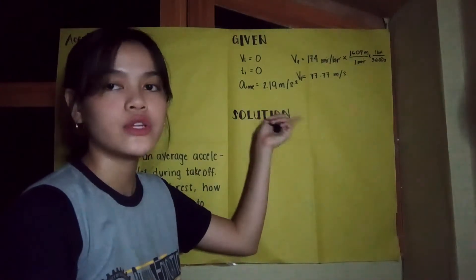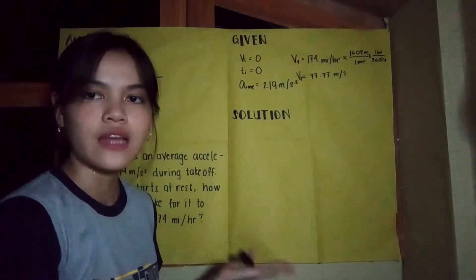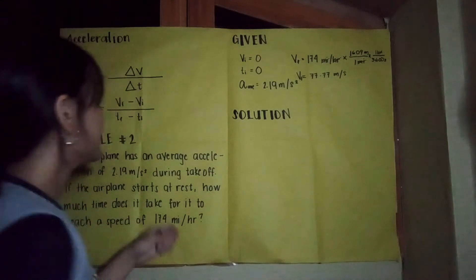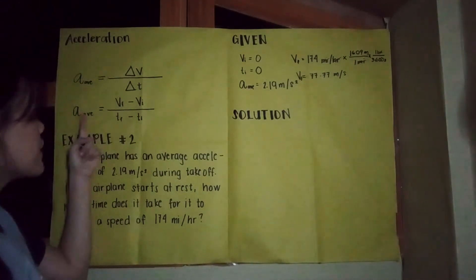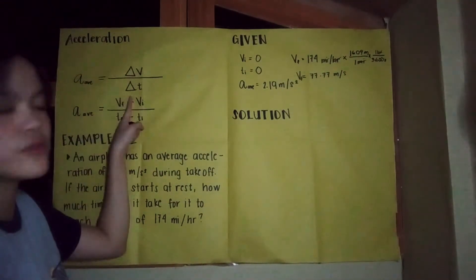Now that our units match, we can now proceed to our solution. So we have the formula here: average acceleration is equivalent to change in velocity over change in time.